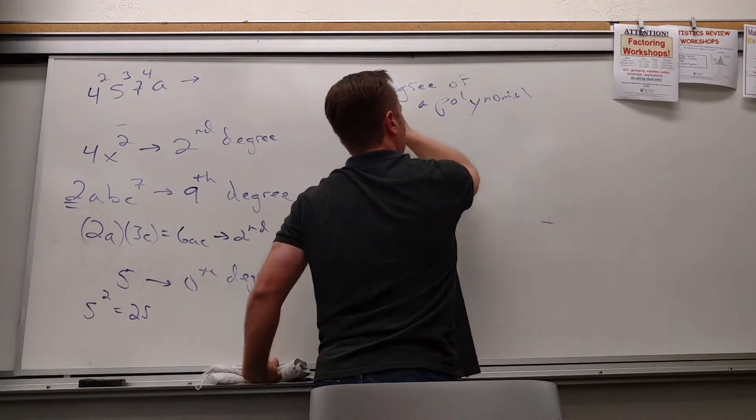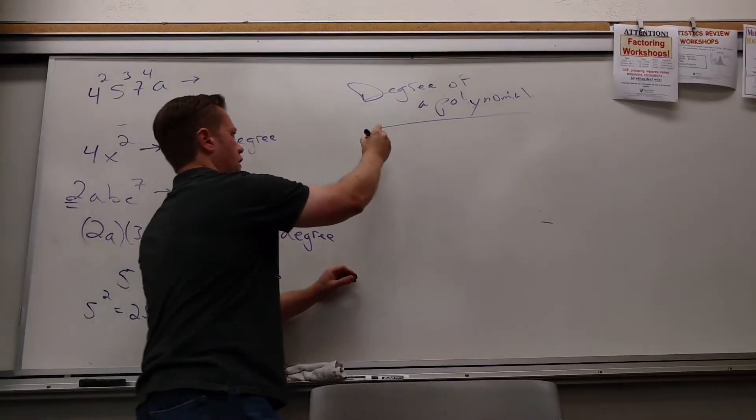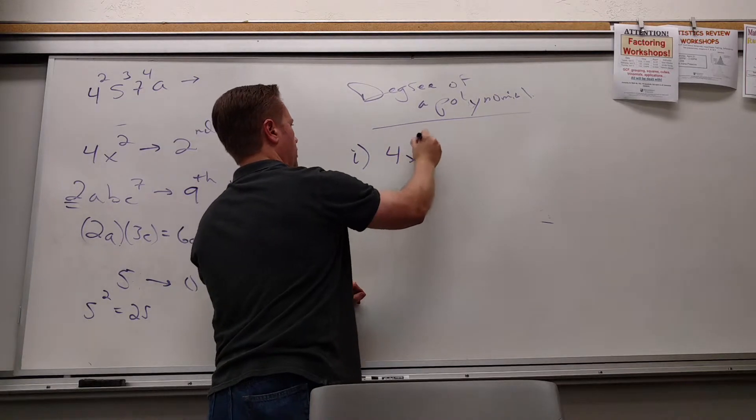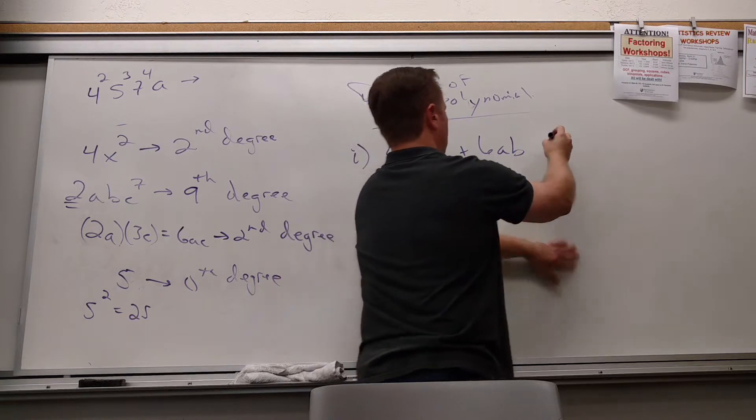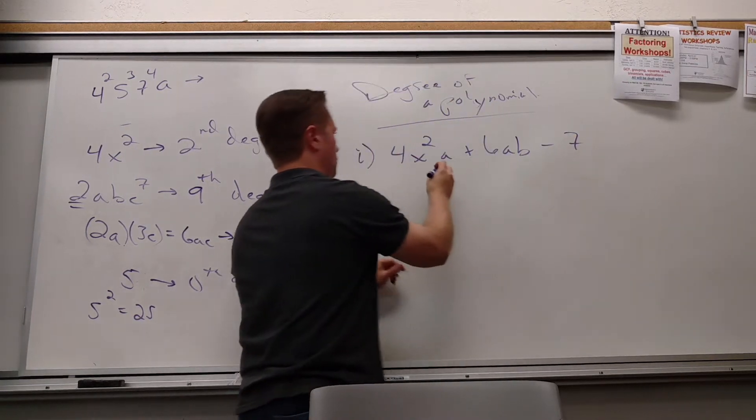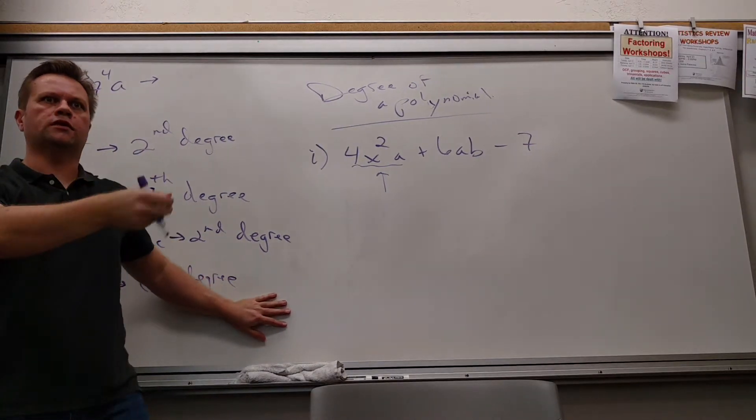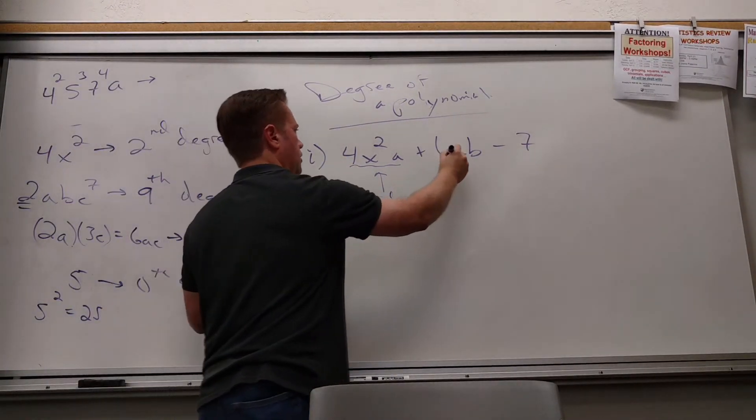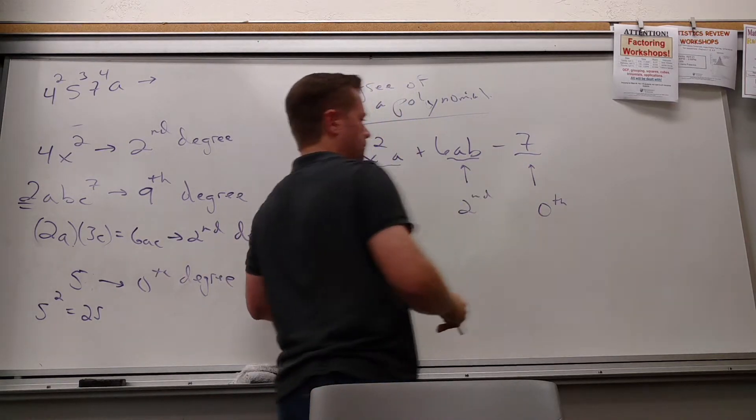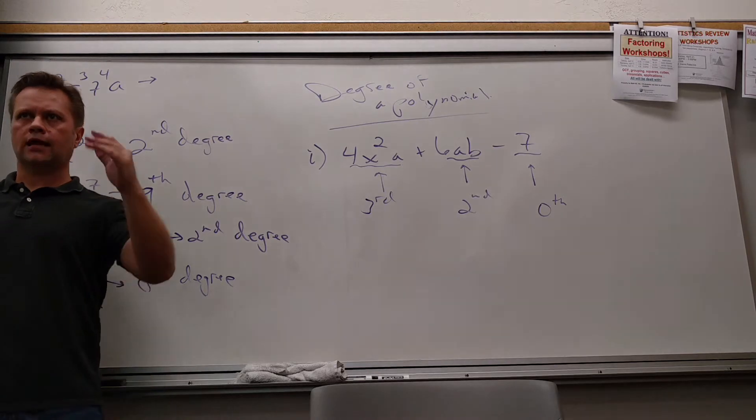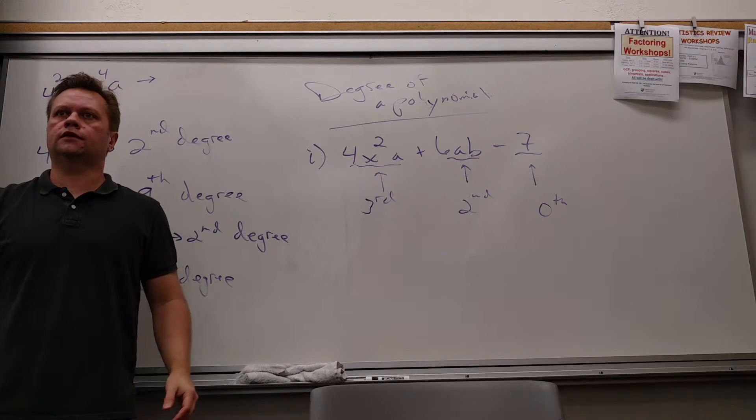You could take the largest degree term. Kick-ass. Exactly right. So if I had, for example, if I had 4x squared a plus 6ab minus 7, what degree is this term? Three. Third degree. I like it. Two x's and an a is the third degree. What degree is this? Second. Second. What degree is this? Zero. Zero. So that's how I get the terms. And then the degree of the whole thing is the highest degree I see.